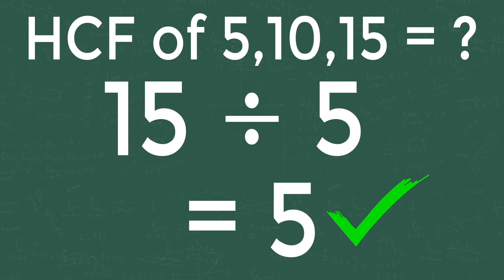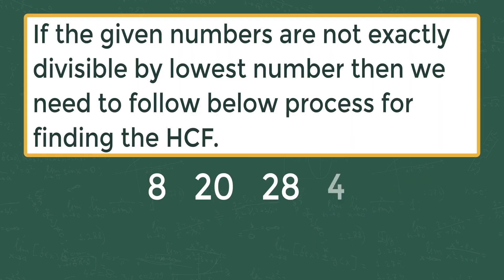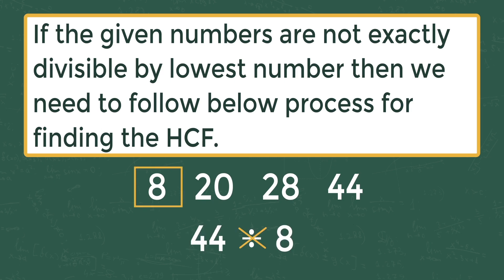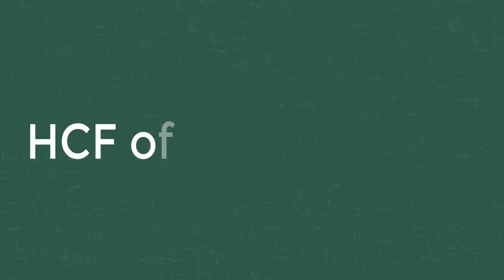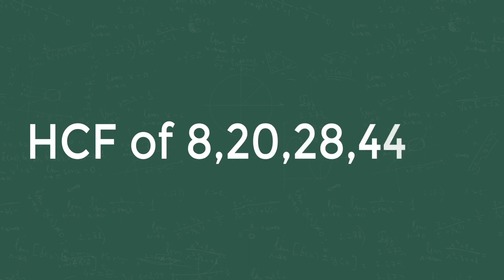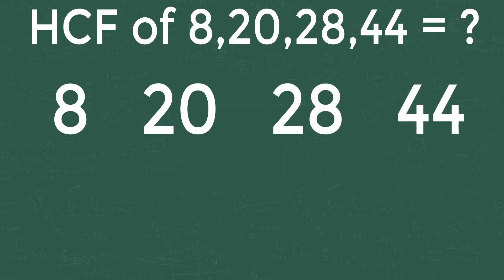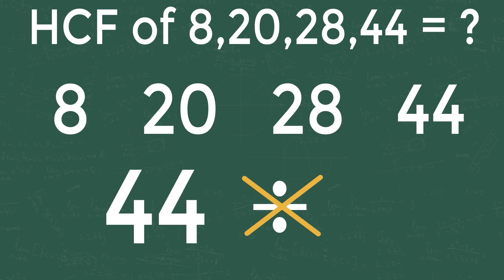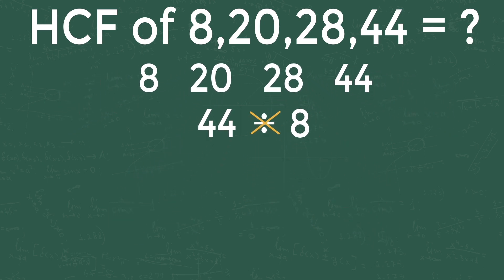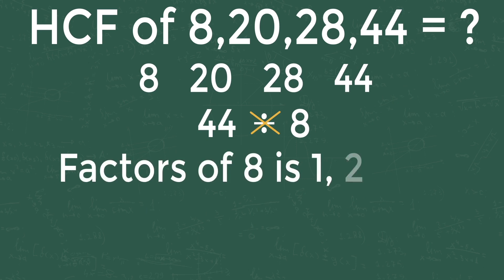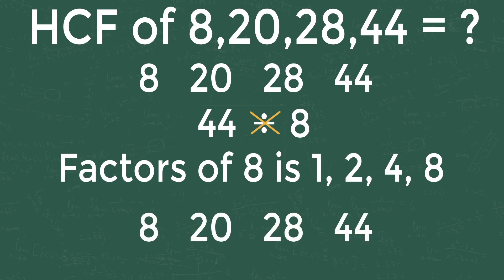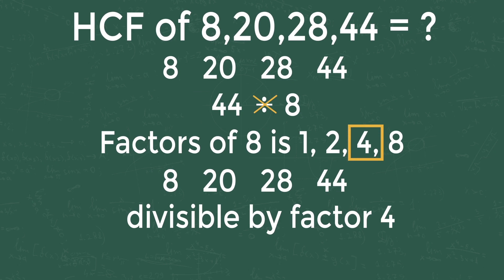Trick 2: if the given numbers are not exactly divisible by the lowest number, then we need to follow a different process for finding the HCF. For HCF of 8, 20, 28, and 44: we can see that 20, 28, and 44 are not exactly divisible by 8. So we find the factors of 8, which are 1, 2, 4, and 8. The numbers 8, 20, 28, and 44 are all exactly divisible by the factor 4, so the HCF is 4.